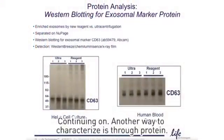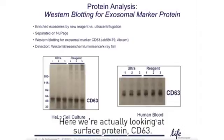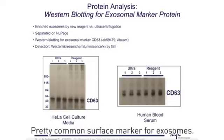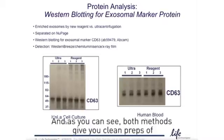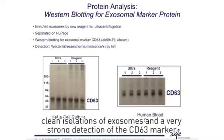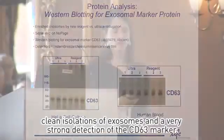Continuing on, another way to characterize is through protein. Here we're actually looking at surface protein CD63, a pretty common surface marker for exosomes, again comparing the two methods and the two sample types. As you can see, both methods give you clean isolations of exosomes and a very strong detection of the CD63 marker.